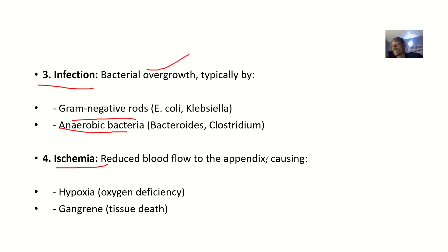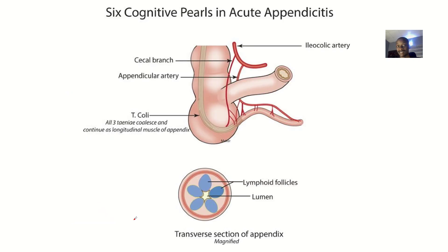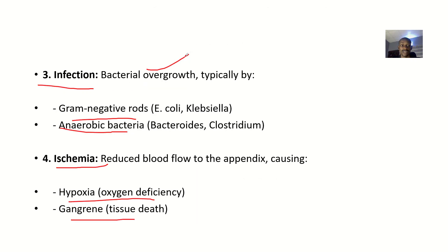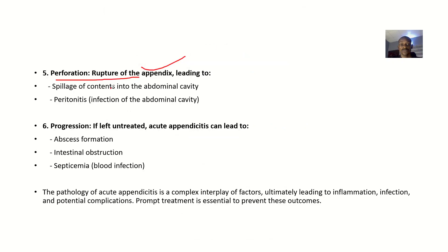After the infection, it can lead to ischemia — reduced blood flow to the appendix. When blood flow is reduced, it can lead to hypoxia, which is oxygen deficiency. It can also lead to gangrene, which is tissue death, and can lead to perforation — rupture of the appendix — as a result of the combined inflammation, infection, and ischemia.